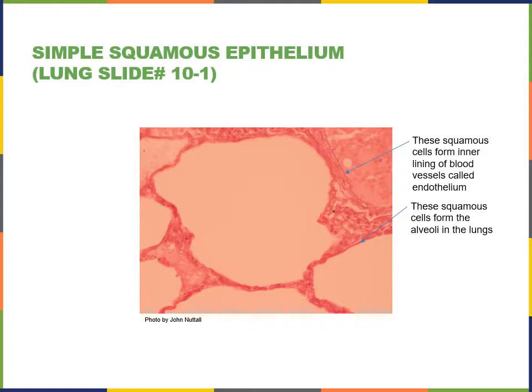The smallest blood vessels are formed out of only the endothelium with a small amount of surrounding connective tissue. These are called capillaries, and they have this very thin simple squamous epithelium to allow diffusion of nutrients and waste in and out of the blood. Here in the lungs, oxygen diffuses from the alveoli into the blood, and carbon dioxide diffuses from the blood into the air of the alveoli.